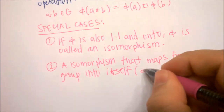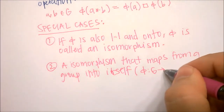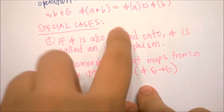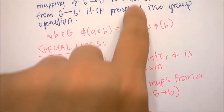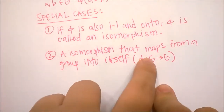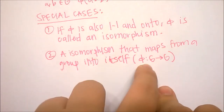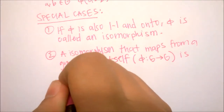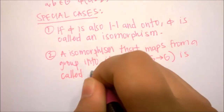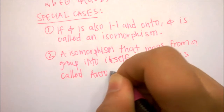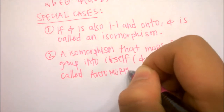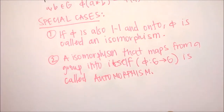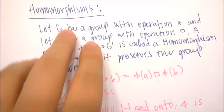We can also consider an isomorphism that maps from a group into itself. If phi takes G and maps it to G, and it's one-to-one, onto, and preserves the operation — meaning it's an isomorphism that maps from G into itself — we call this an automorphism. So automorphisms and isomorphisms are special types of homomorphisms.